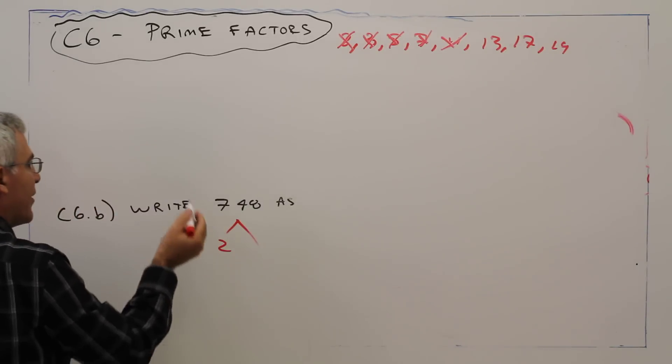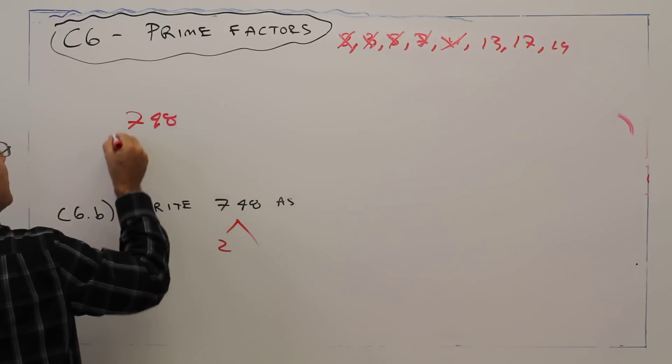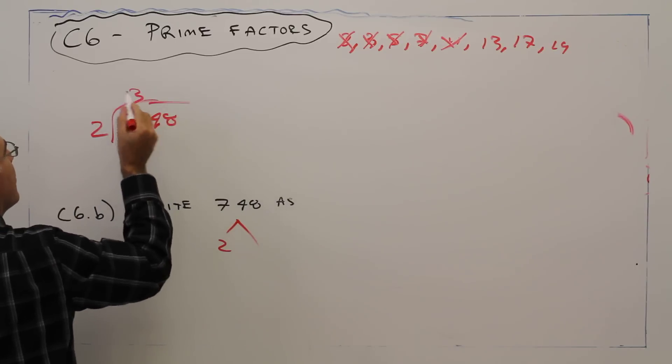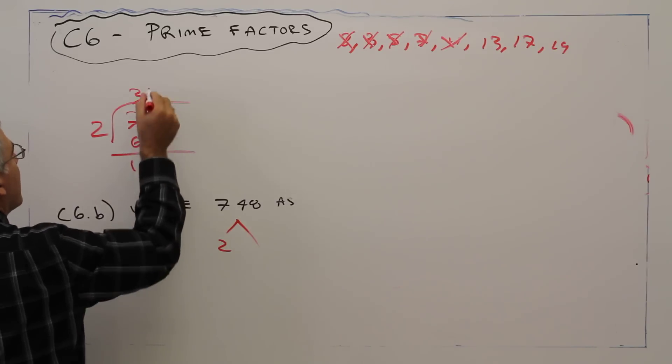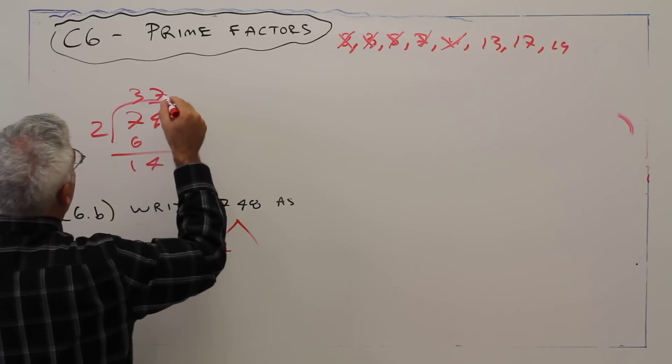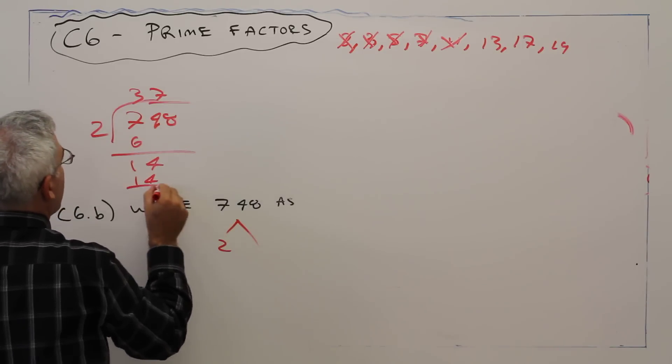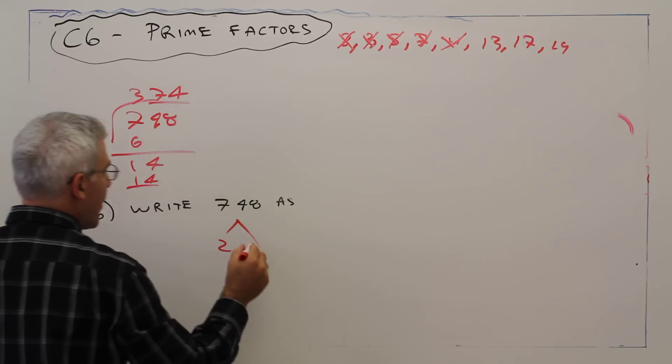So 2, how many times is 2? 748. 748 divided by 2, 3, that's a 6, that's a 6, 14, 7, so 374.